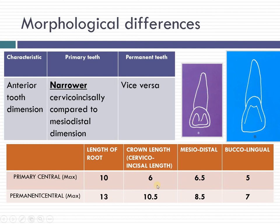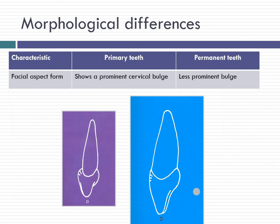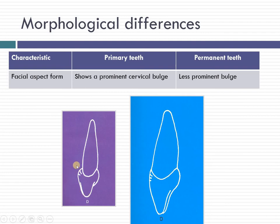Looking at one single tooth, you will be able to identify whether it is deciduous or permanent based on the cervico-incisal to mesiodistal dimension ratio. The cervical constriction is prominent also in the buccolingual segment, with a very prominent cervical bulge in the deciduous teeth. This cervical bulge plays an important role in giving anchorage to a crown — when you place a metallic crown on a deciduous tooth, this contour enables fixation very easily.